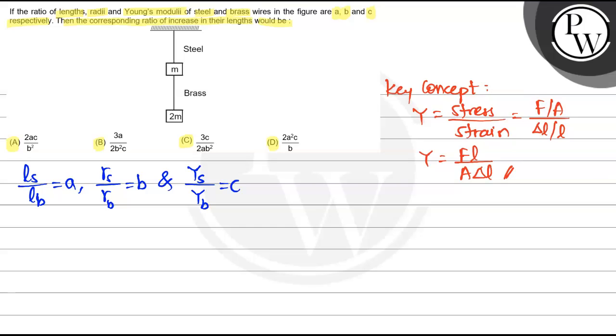These three things are given. Now using this formula to simplify, we have to find the increase in length, so delta L. Let's simplify everything in the formula. Y equals FL divided by A delta L. This gives me delta L equals FL divided by AY.